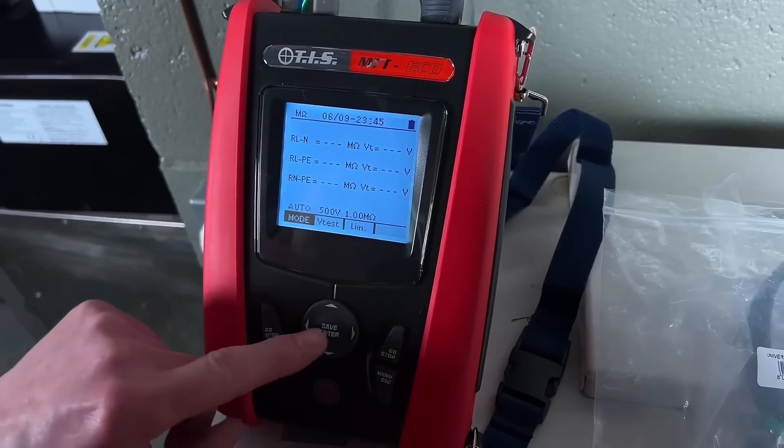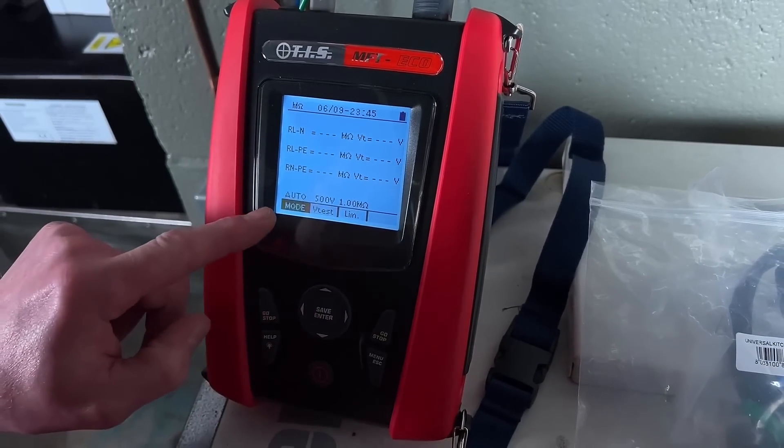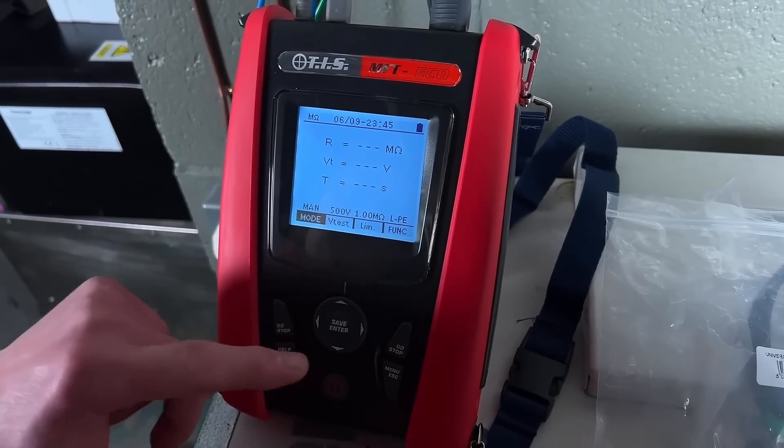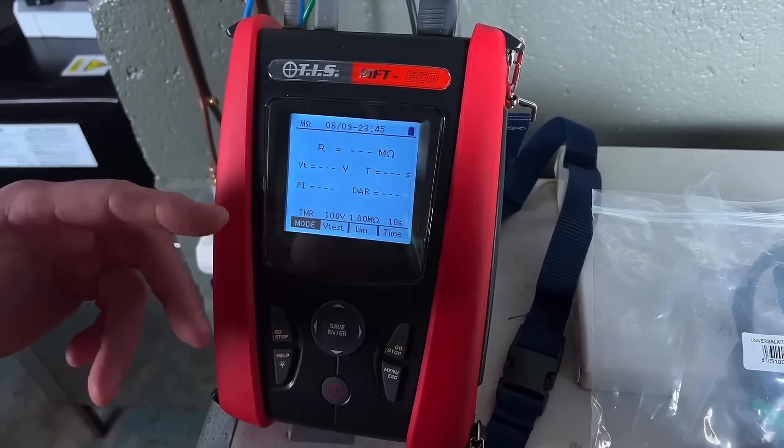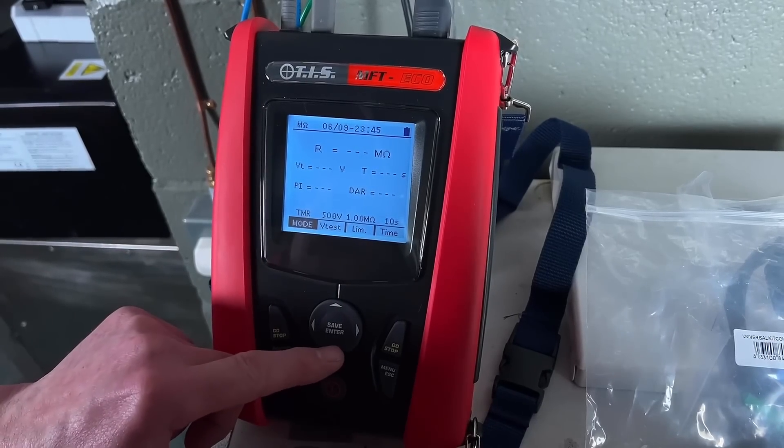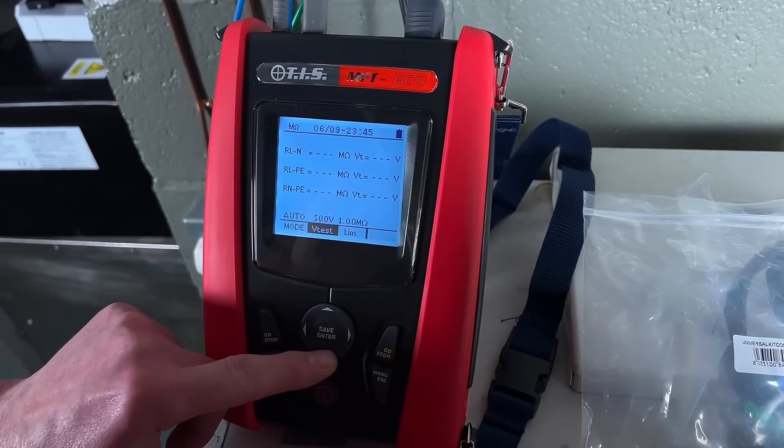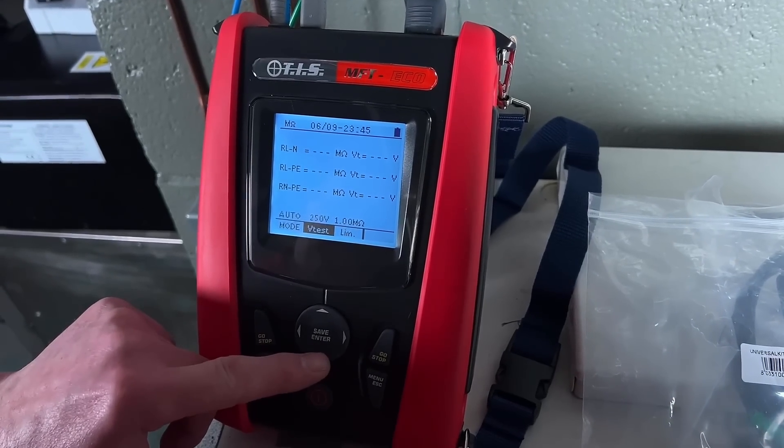Now I've got it set already at the bottom here on auto. I could have it on this one here, which is a manual test where you can do them individually, and you've got one there where you can actually have the time of which you want to carry out that insulation resistance test for. So I've got it on auto.